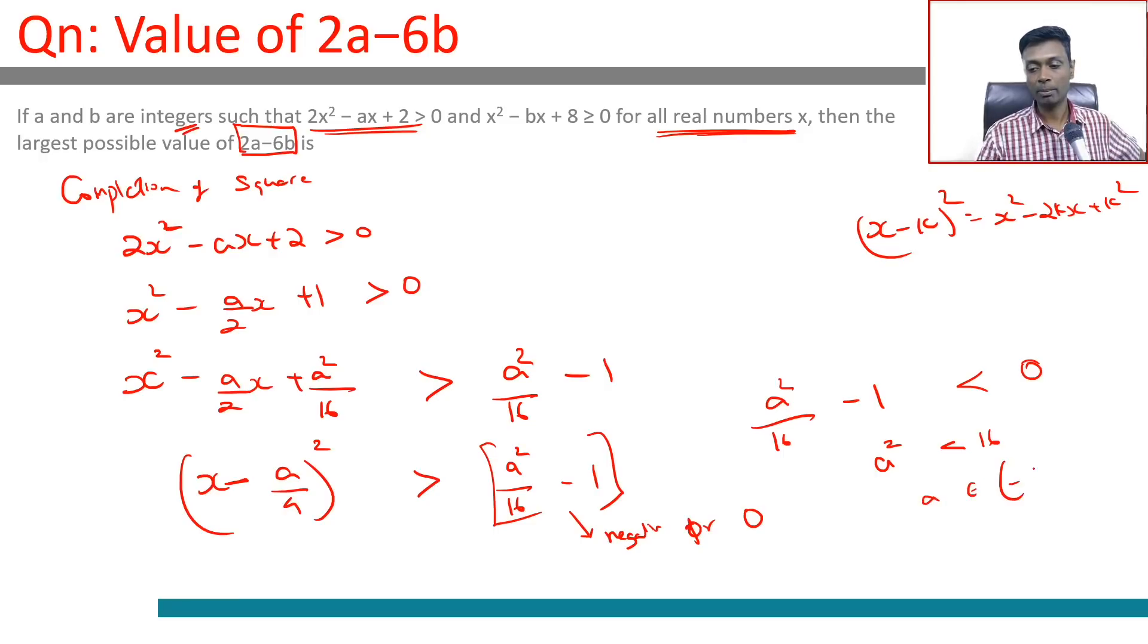a is in the range -4 to +4. So we want the largest possible value of 2a - 6b, so a has to be as high as possible. a cannot be 4, so a should be 3.